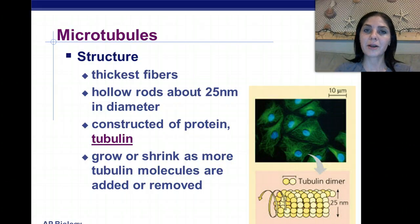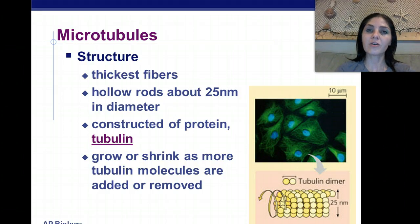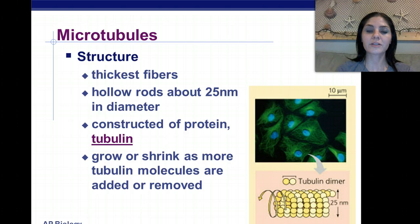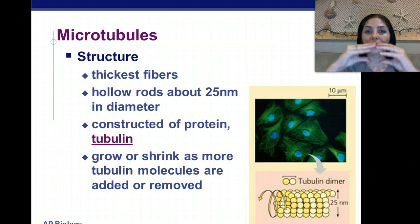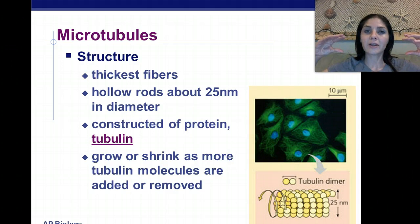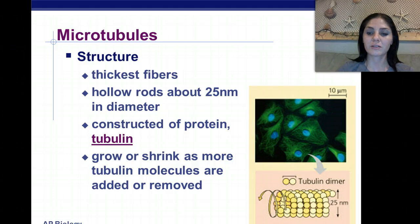So the first type of fiber we're going to talk about are microtubules. They are the thickest of the fibers, and they are hollow rods that are about 25 nanometers in diameter. They're constructed of the protein tubulin, and they grow or shrink as more tubulin molecules are added or removed. So if more tubulin molecules are added, they're going to expand and get larger, and if they're taken away, then they're going to get smaller.